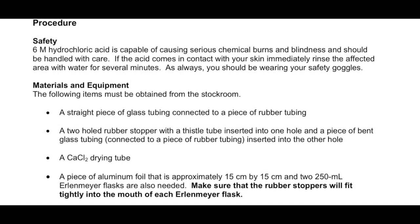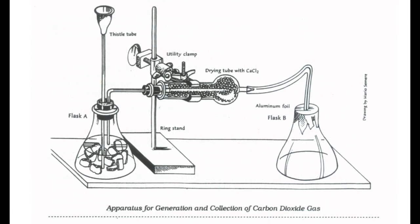The first thing that we'll need to do is to set up our apparatus. We have a couple of flasks, flasks A and B, we have some glass tubing, and we have a calcium chloride drying tube that will remove the water from our carbon dioxide sample. We will set that up using the following experiment diagram.